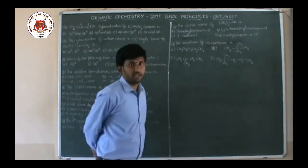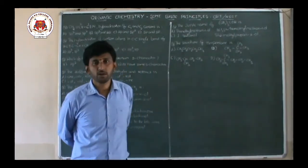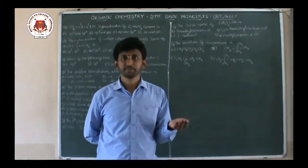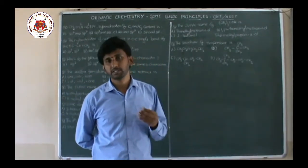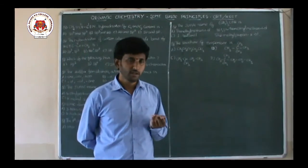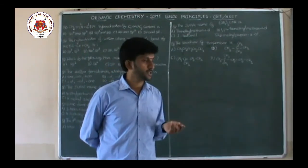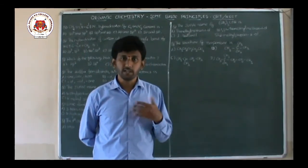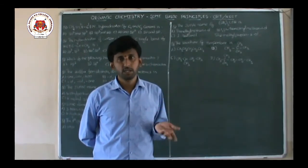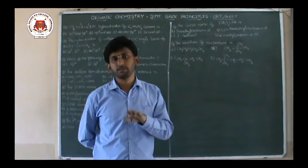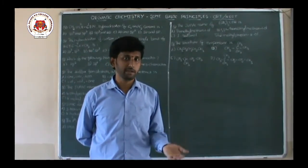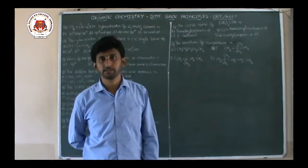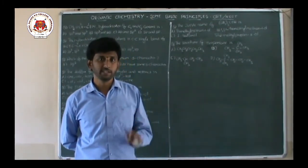What is hybridization? It is the intermixing of atomic orbitals to produce orbitals of equivalent energy and equivalent number. The resulting orbitals are called hybrid orbitals, and this process is called hybridization.